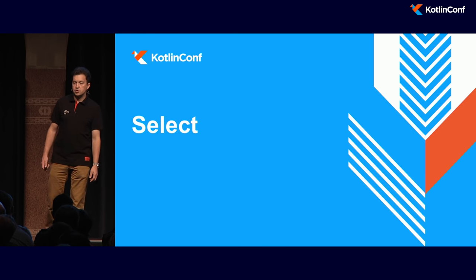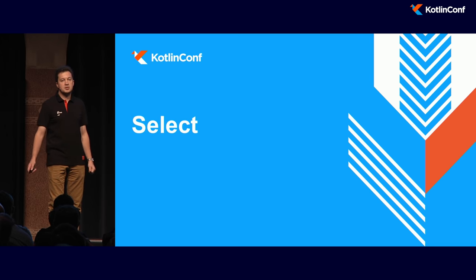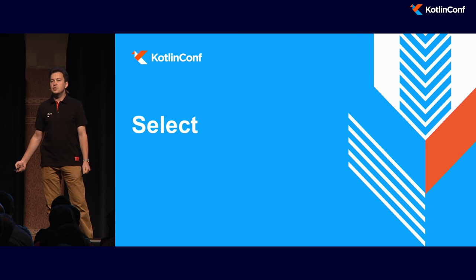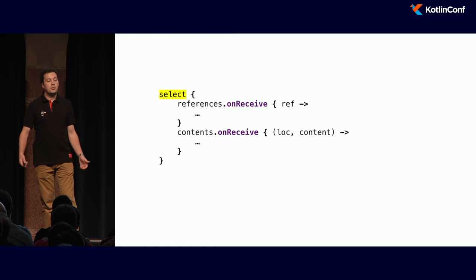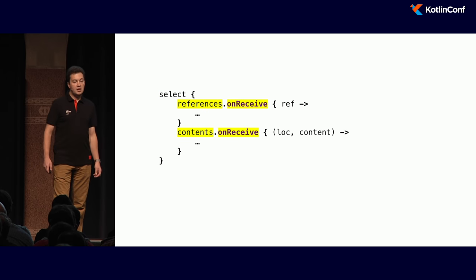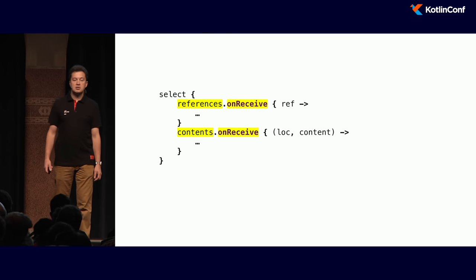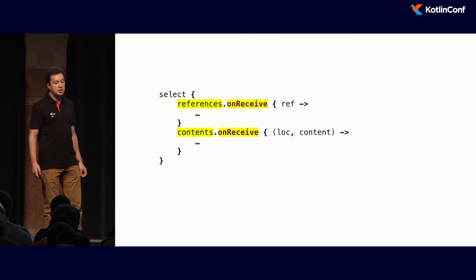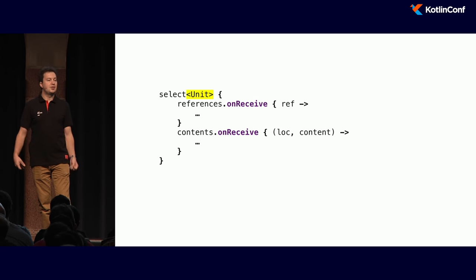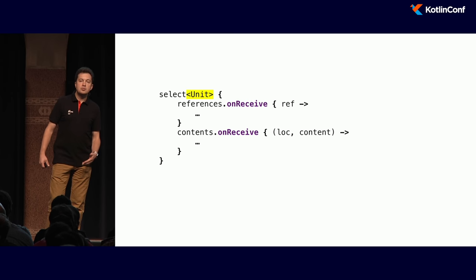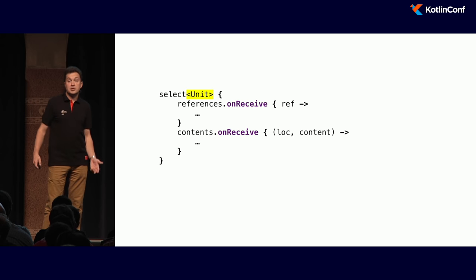The `select` expression is the trick that allows us to structure our code to work with multiple channels without using shared mutable state. We write `select` and put a number of clauses inside: if something is received over the references channel, do this; if something is received over the contents channel, do this. Since `select` is an expression and in this example we don't need any result, we say the result is going to be `Unit`.